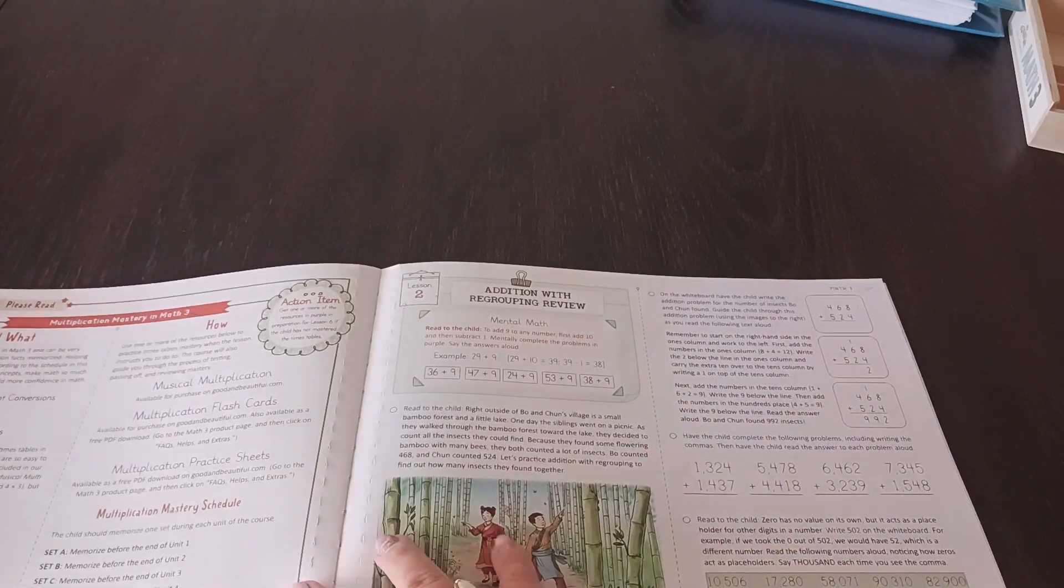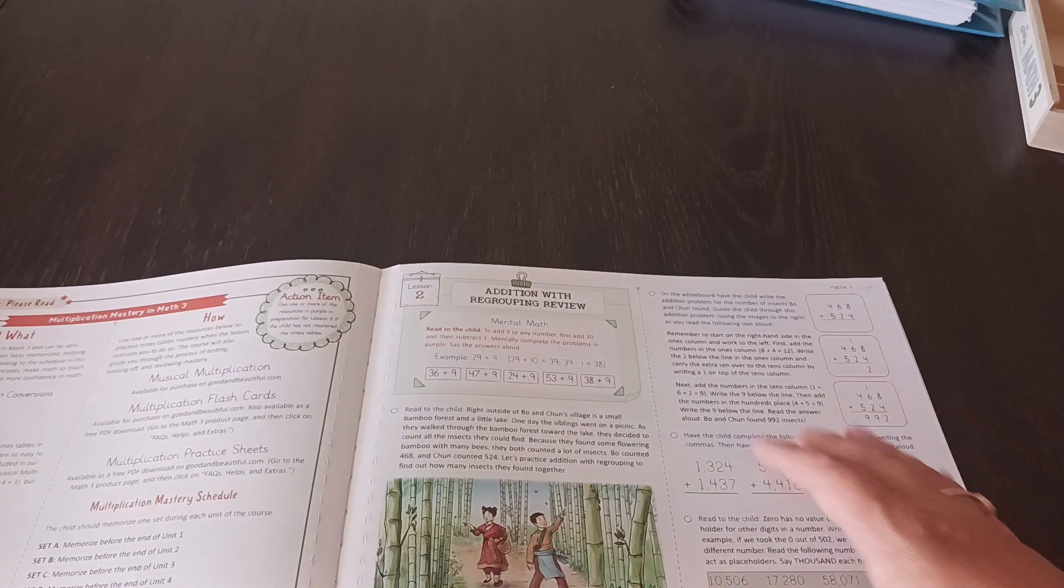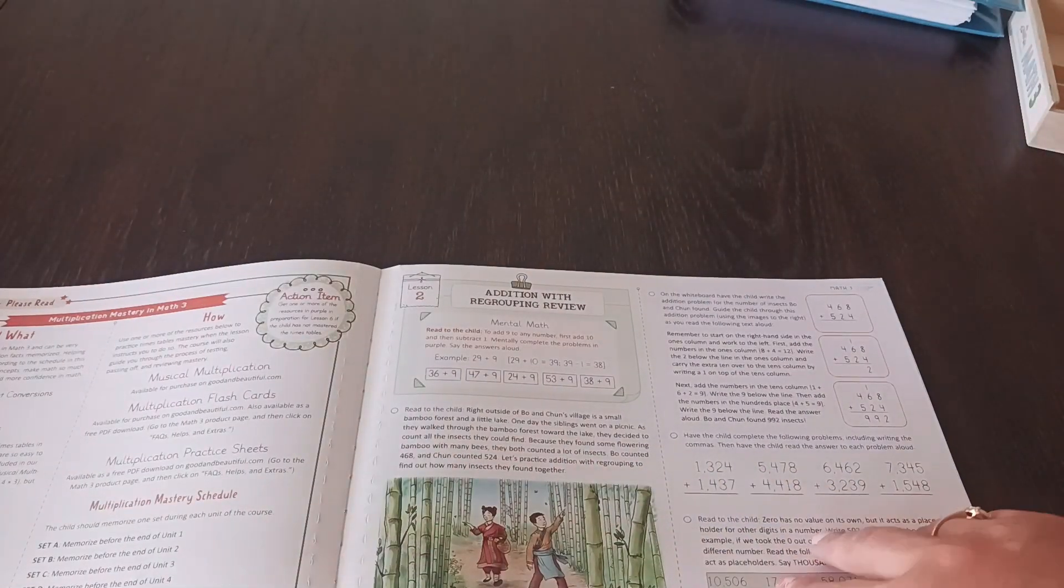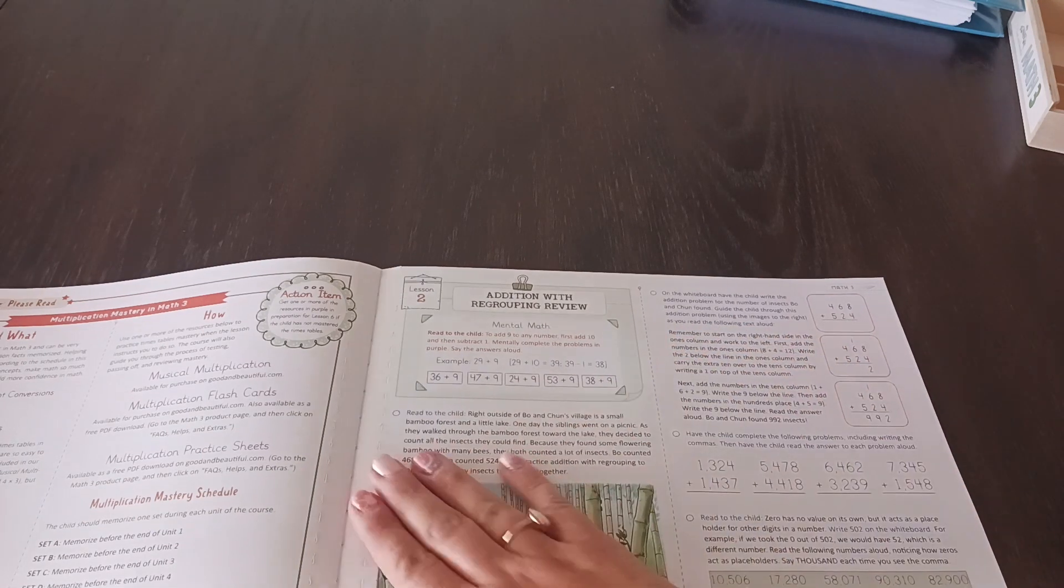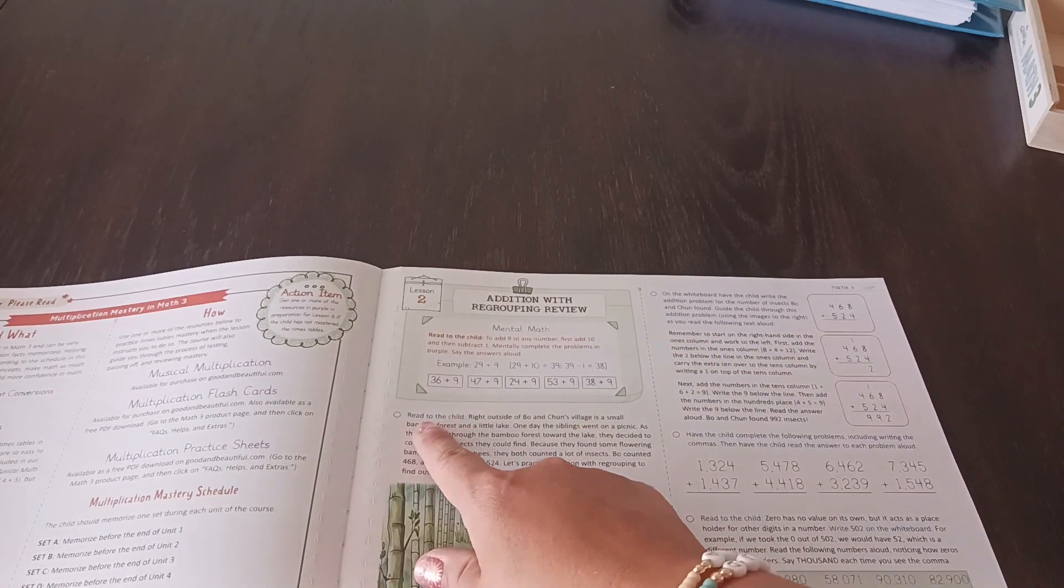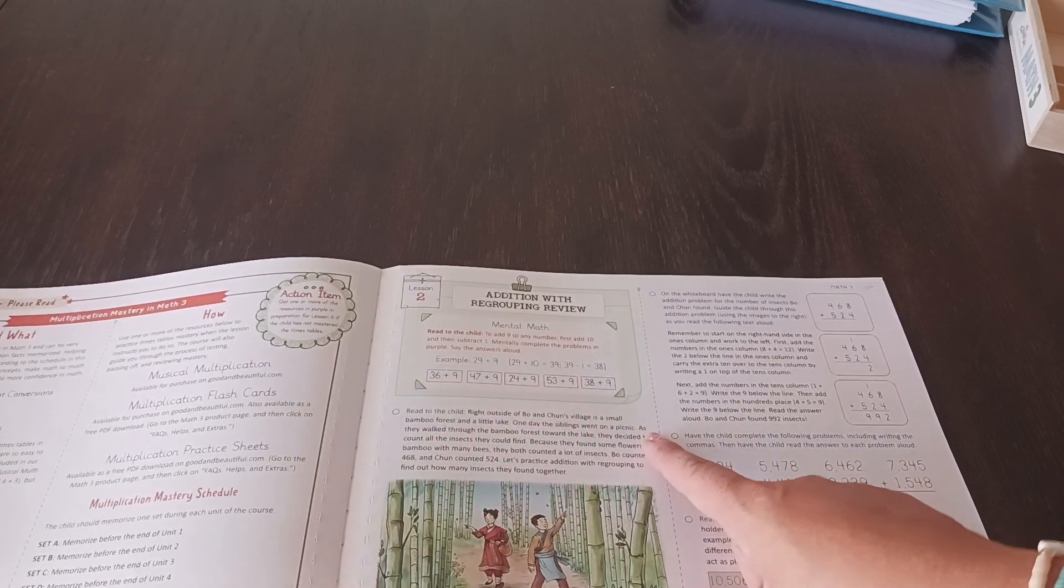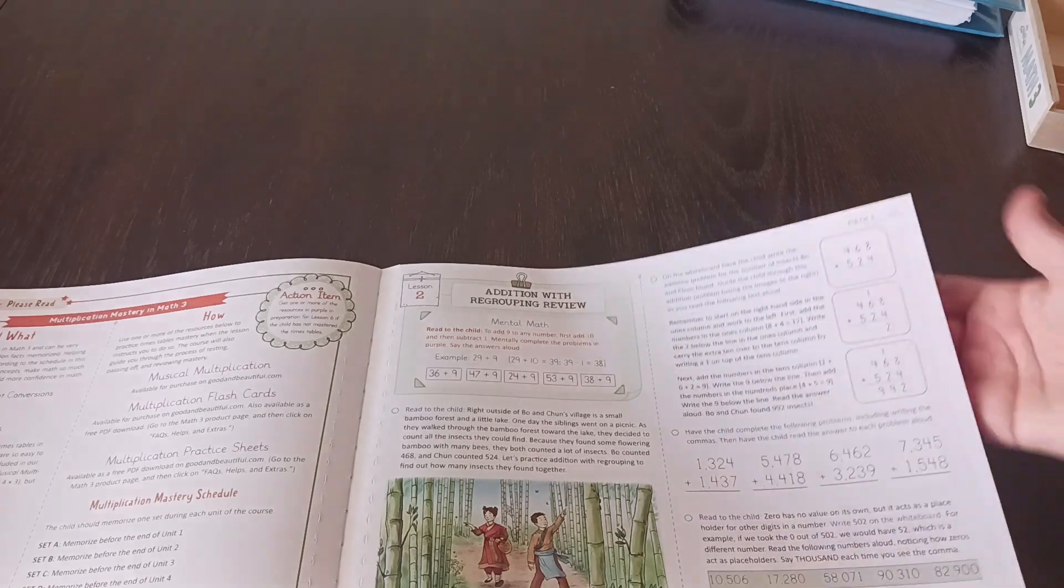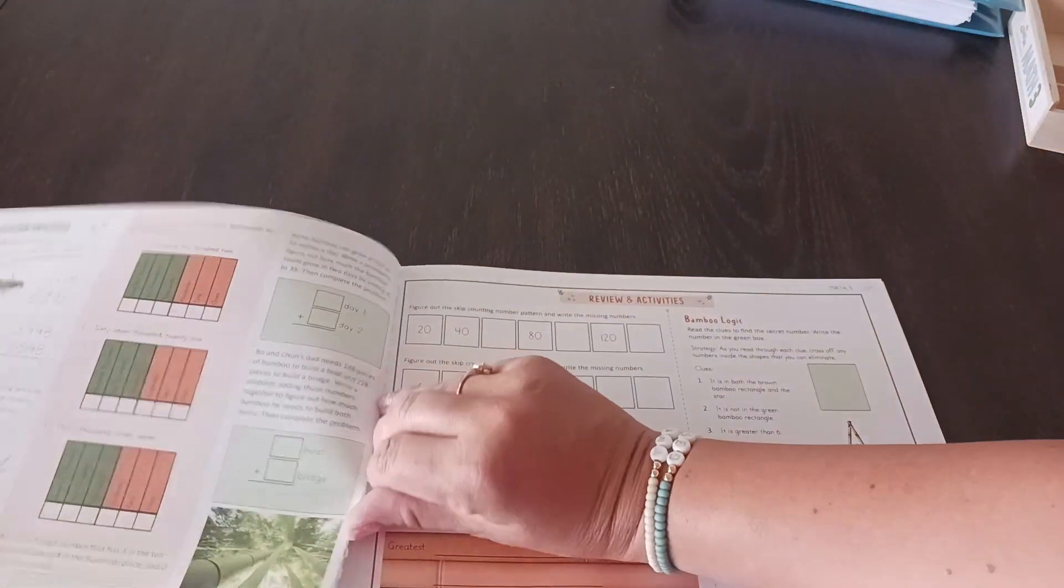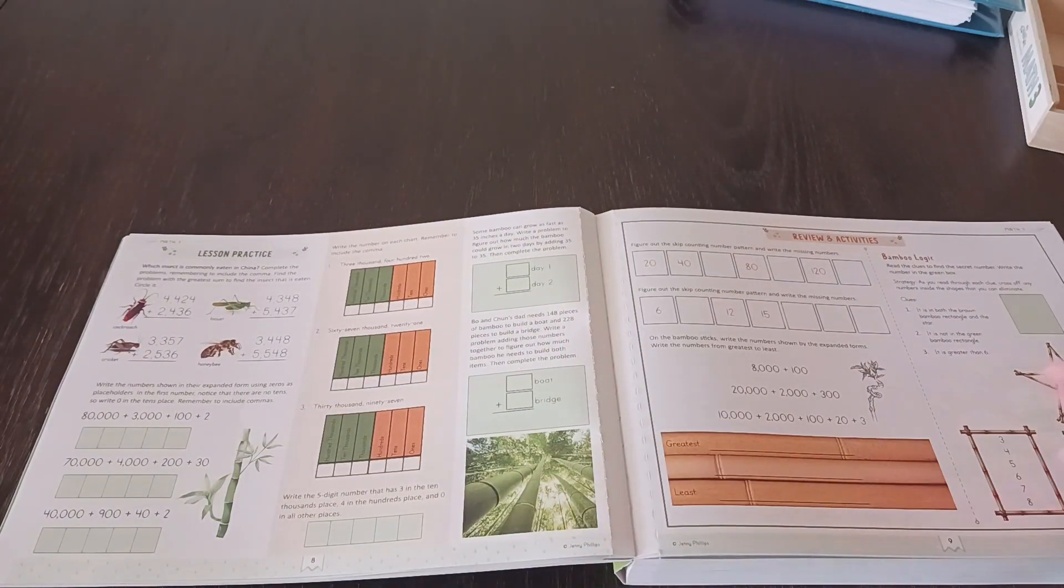And also, this is probably, we didn't do math two from the good the beautiful, but I'm assuming that the first few lessons may be reviewed from the previous grade level, but it's so easy. I mean, it literally says read to the child. It gives you exactly what to say. It tells you what you need to use. And it's really is open and go for the most part.